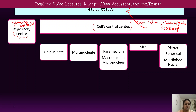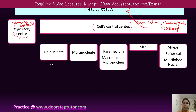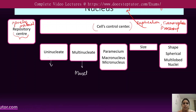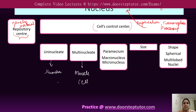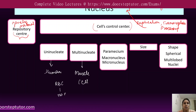A cell may contain a single nucleus — for example, the uninucleate — or it may contain multiple nuclei, like in muscle cells, which are multinucleate. Most cells in eukaryotes, such as in humans, are uninucleate. However, some cells contain no nucleus at all.